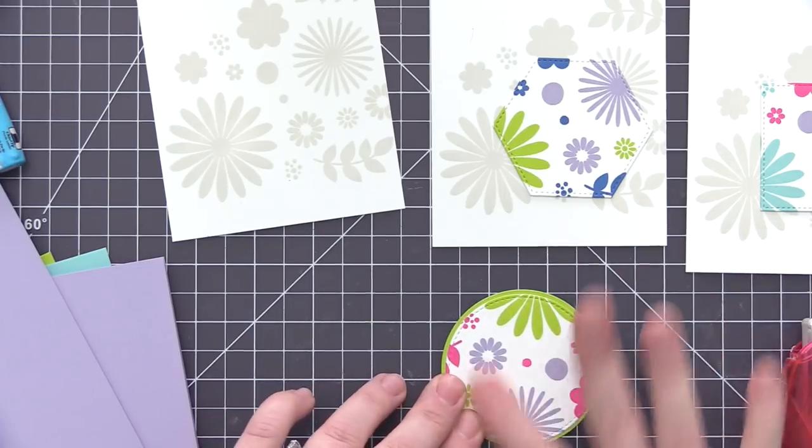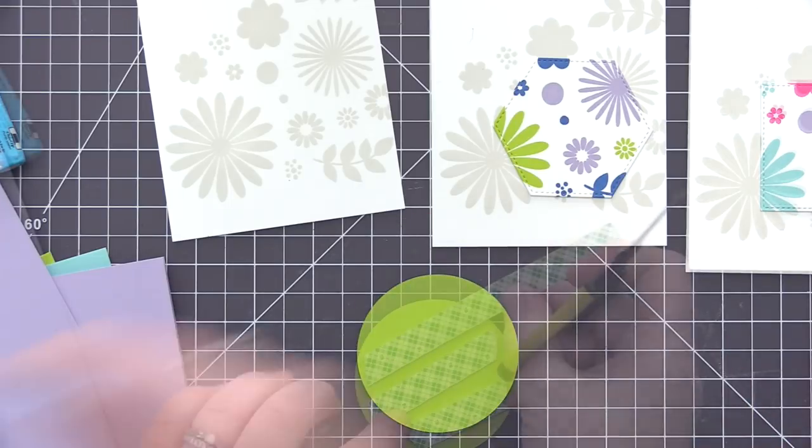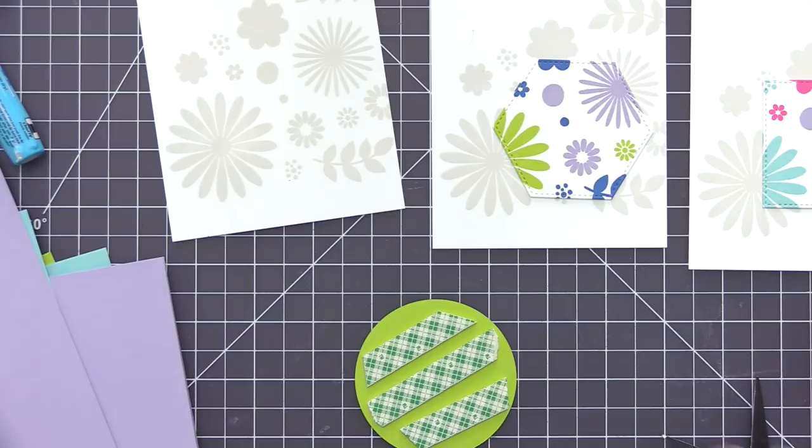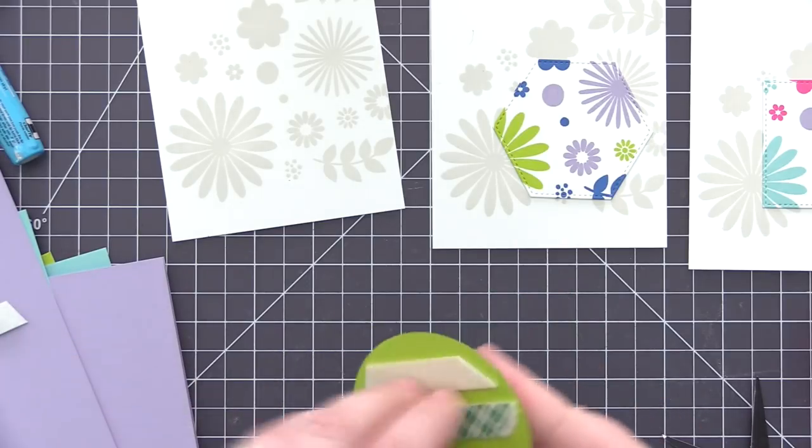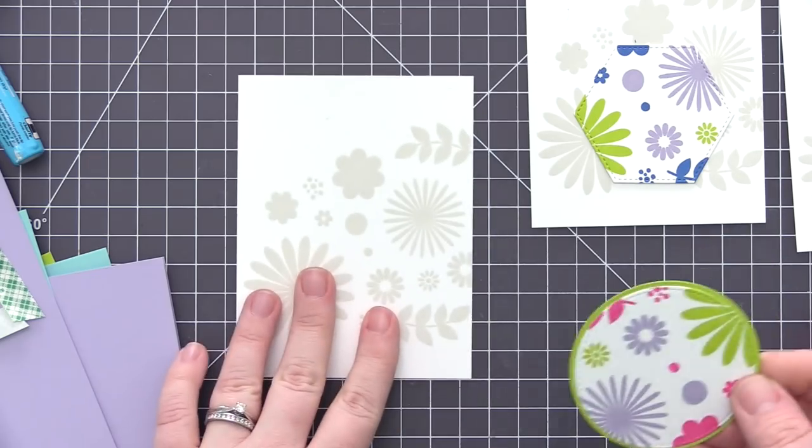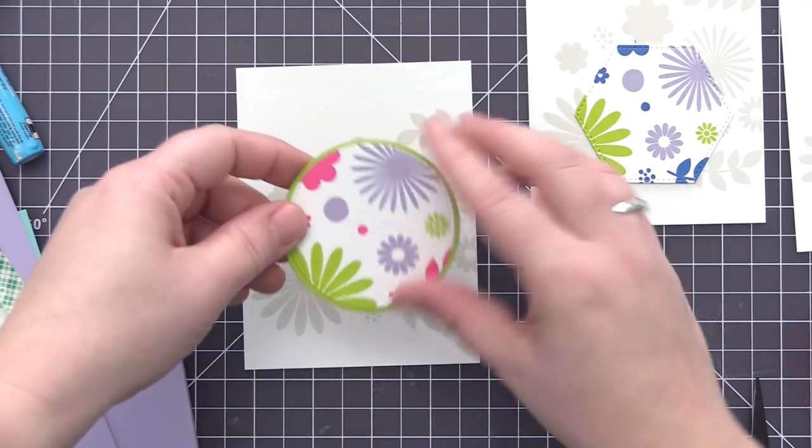And then for the hexagon and the square I'm just going to freehand cut those ones. I don't want to use the Stacks dies the next size up from what I used to cut the initial panel because I want the mat around it to be a little bit smaller. So it's really quick and easy to create custom ones just with your scissors since they have straight edges.